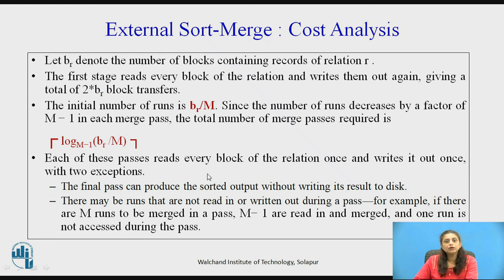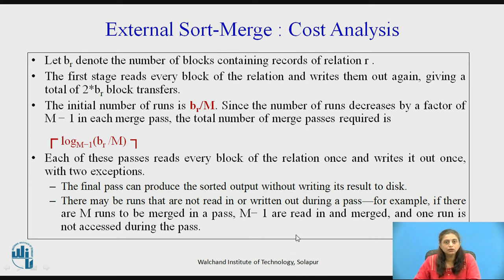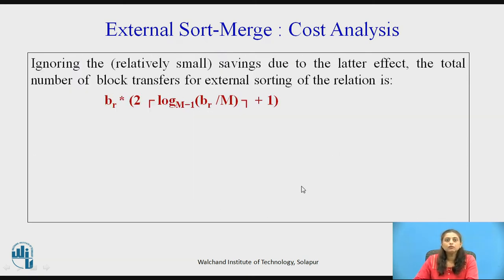Each pass requires 2 block transfers (one read, one write), with two exceptions: the final sorted output does not need a write back, and sometimes a read or write can be skipped. Considering all these factors, the total number of block transfers is B_R × (2 × ⌈log_{M-1}(B_R / M)⌉ + 1).